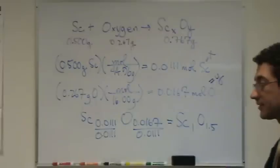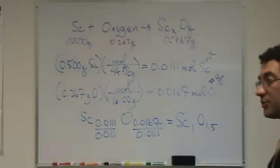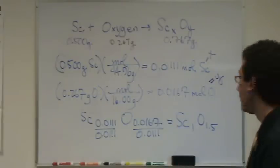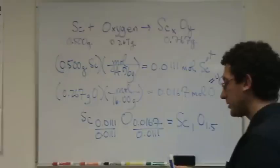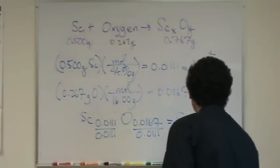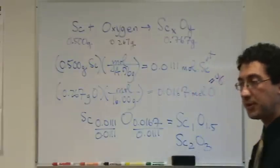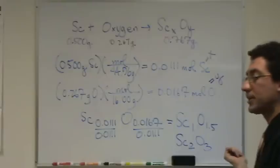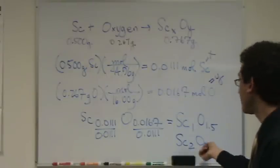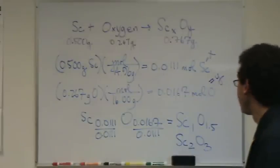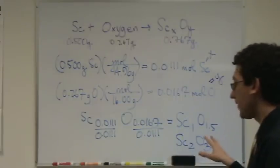Does that look like a good answer? It's very close. What should I do? You need it in whole numbers. Yeah, I need it in whole numbers. I should multiply by 2. That'll happen occasionally. You'll get a 0.5. That's totally fine. Just multiply by 2. So, you'll get scandium 2, O 3. That's your final empirical formula answer. Which makes a lot of sense, because scandium is often plus 3. It's plus 3 here. Oxygen is minus 2. So, that makes a lot of sense. Scandium acts a lot like aluminum. So, that's my final answer there.